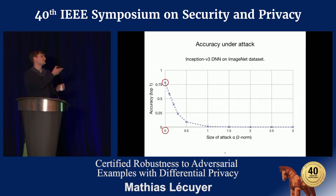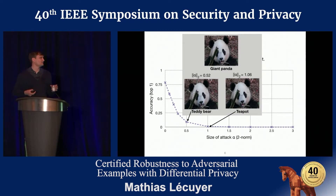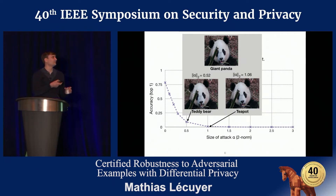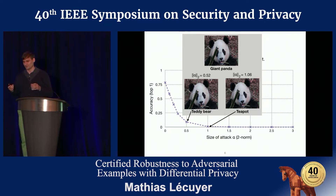Accuracy drops to 7% for attacks up to size 0.5 and 1% for size 1. To give an example of what that means: with an attack of size 0.5 you can turn a giant panda into a teddy bear, and with size 1 you can turn it into a teapot — and basically the changes are invisible to the naked eye.